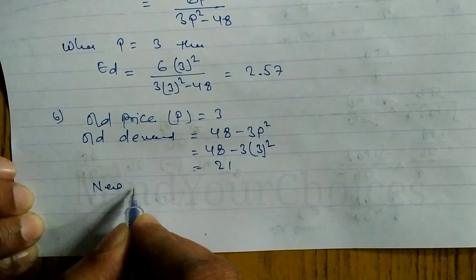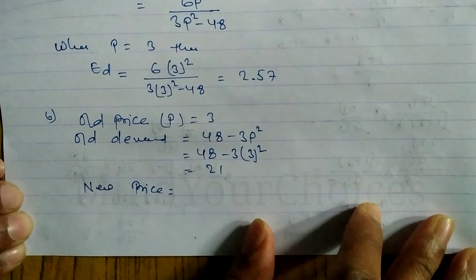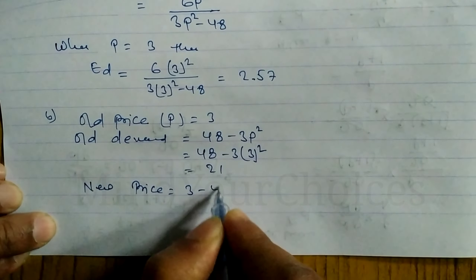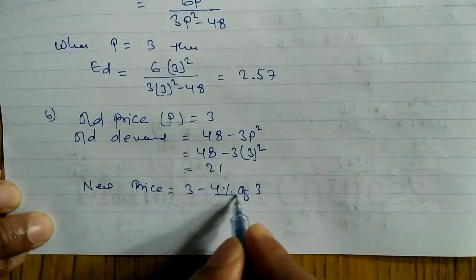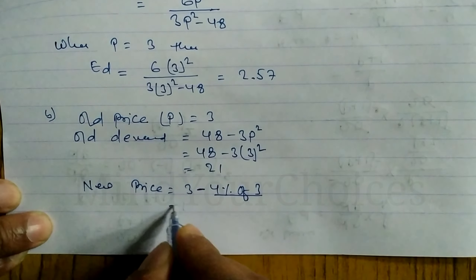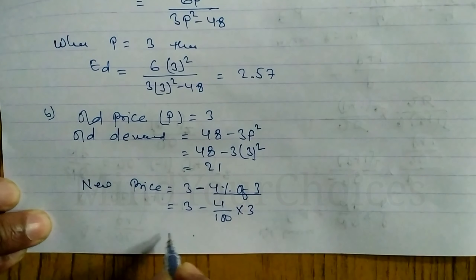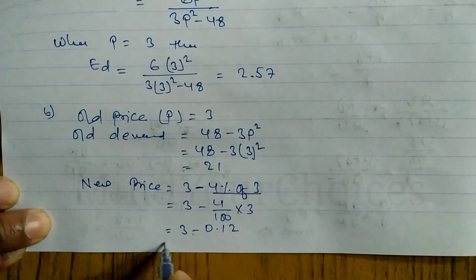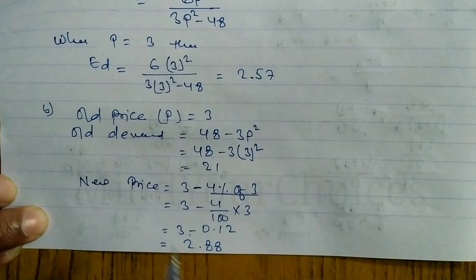Now finding the new price: the original price is 3, and it decreases by 4%. So new price = 3 - 4% of 3 = 3 - (4/100 × 3) = 3 - 0.12 = 2.88. The new price is 2.88.